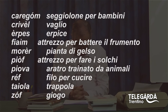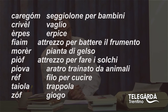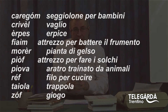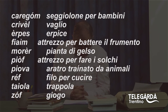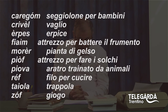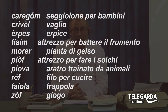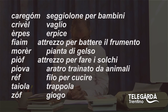Il 'morer' — con accento tonico sulla E aperta — è la pianta di gelso, fondamentale negli anni passati quando si coltivavano i 'cavalieri', cioè i bachi da seta, che mangiavano le foglie di gelso. Il 'pioff' è l'attrezzo per fare i solchi in campagna. La 'piova', o 'piova' a seconda delle località, è l'aratro trainato da animali. Il 'ref' — da me 'il metro de ref' — è il filo per cucire. La 'taiola', una volta, era la trappola. Infine il 'zoff', che è il giogo dei buoi.